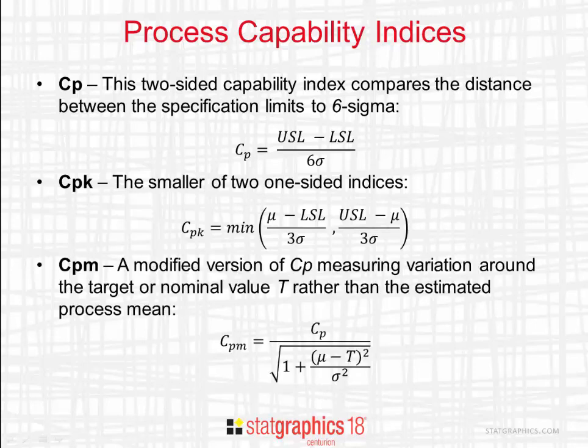A third popular index is called CPM. CPM is a modified version of CP that measures variation around a target value rather than around the estimated process mean.